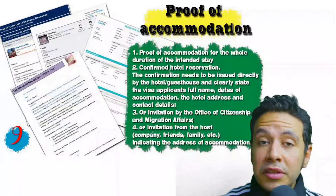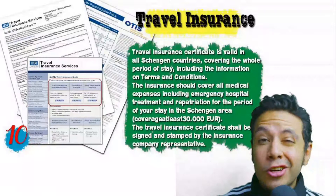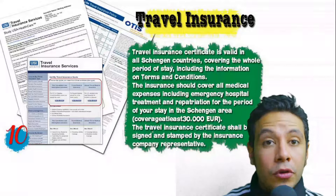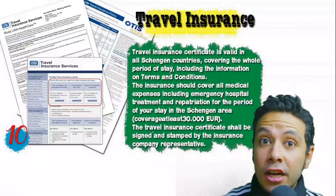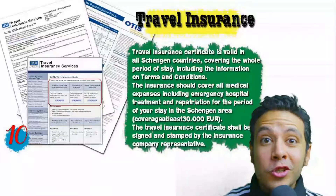Many countries, especially Schengen area countries, require travel insurance. You have to apply through officially accepted companies. For Schengen area countries, the insurance coverage must be at least 30,000 euros. In general, you can apply for this insurance online.